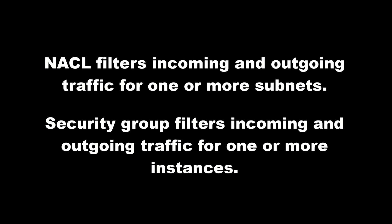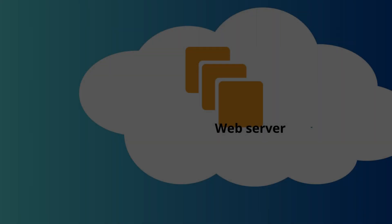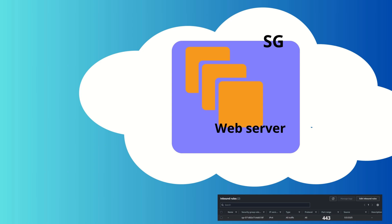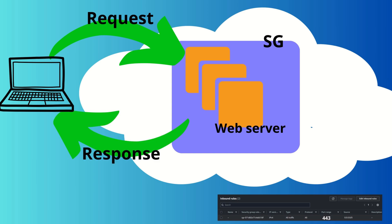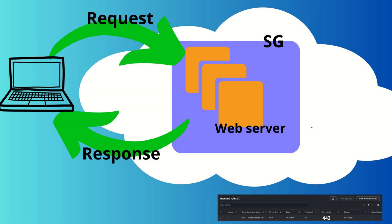Now let's talk a little about security groups. Security groups are also used to filter incoming and outgoing traffic, but they are a bit different from NACLs because they operate at the instance level, not at the network level. Security groups are stateful — imagine you are hosting a website on AWS. Once you allow incoming traffic on port 443 for HTTPS requests, the security group remembers the context, so when your server responds back the security group automatically permits the return traffic without additional configuration. When creating a security group you only add entries that allow something; you cannot deny traffic like you can with NACLs.